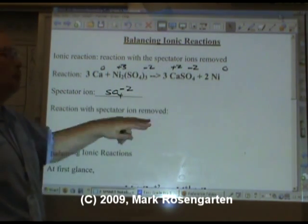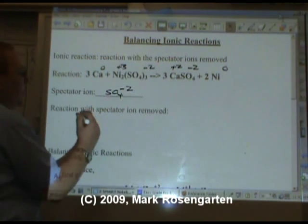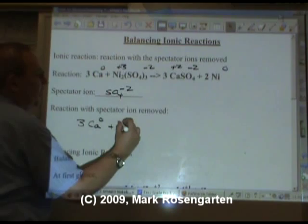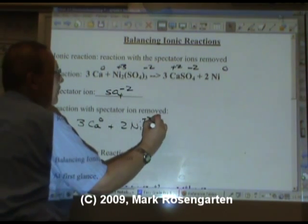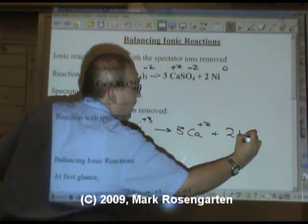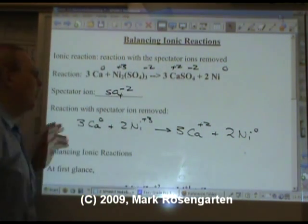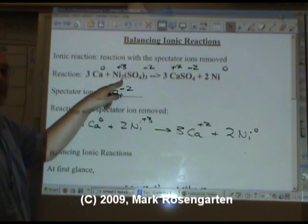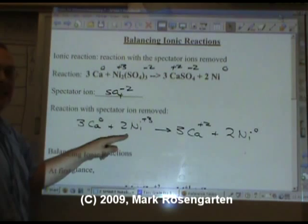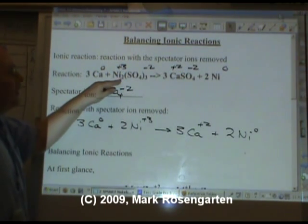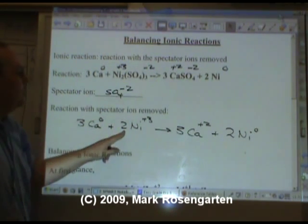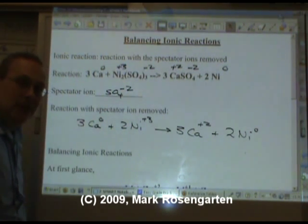Spectator ion can actually be removed. So if we wrote it with the spectator ion removed, it would be 3 Ca⁰ + 2 Ni³⁺ forms 3 Ca²⁺ + 2 Ni⁰. Now why did I put the two here? Why didn't I keep it there? Because remember, ions repel each other. They don't bond together. These nickels aren't bonded to each other. They're bonded to the sulfate. So if we ignore the sulfate, we put the two in front to show that they're separate from each other.